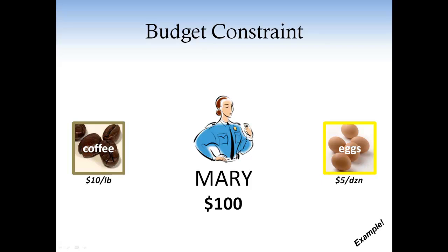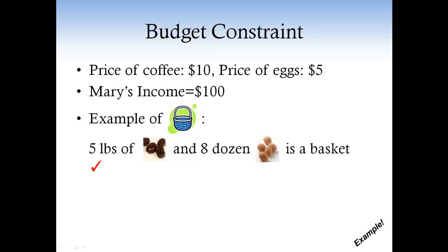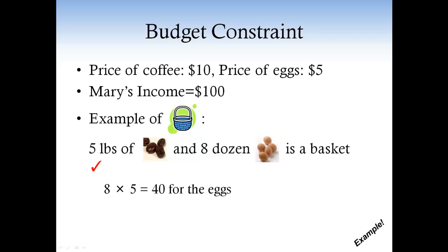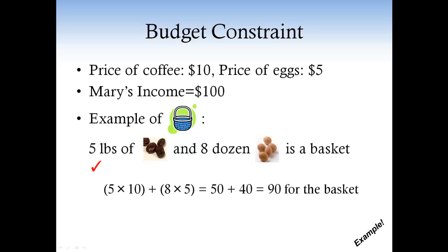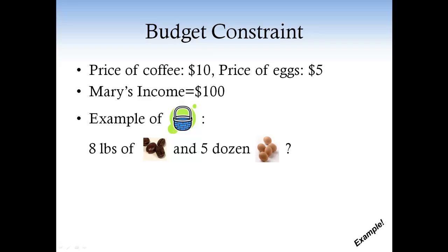Can you give me an example of one consumption basket that belongs to Mary's budget constraint? What about 5 pounds of coffee and 8 dozen eggs? Let's see. 5 pounds of coffee and 8 dozen eggs is a consumption basket. To see if it belongs to Mary's budget constraint, we need to check if Mary can afford it. To buy 5 pounds of coffee, she spends $50 — $10 times 5 pounds. And to buy 8 dozen eggs, she spends $40 — $5 times 8 dozen. So to buy the whole basket, you need $90. The basket is affordable because $90 is less than Mary's income of $100, and so the basket belongs to the budget constraint.